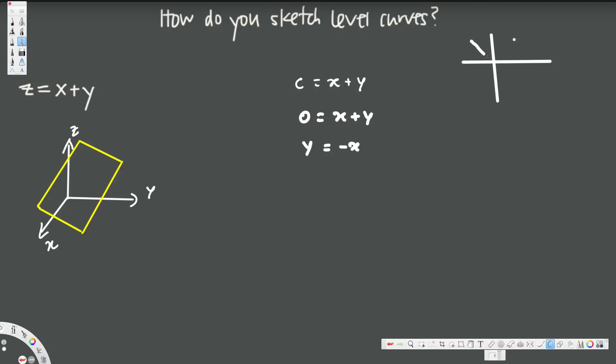Let's see what happens if c = 1. When we put c = 1, we have 1 = x + y, therefore y = -x + 1. This line is going to be shifted one unit upward.